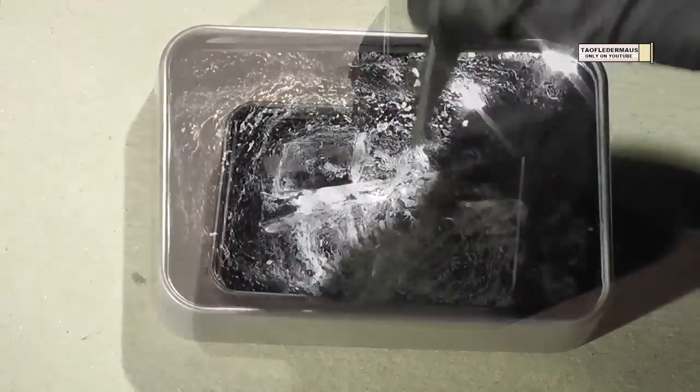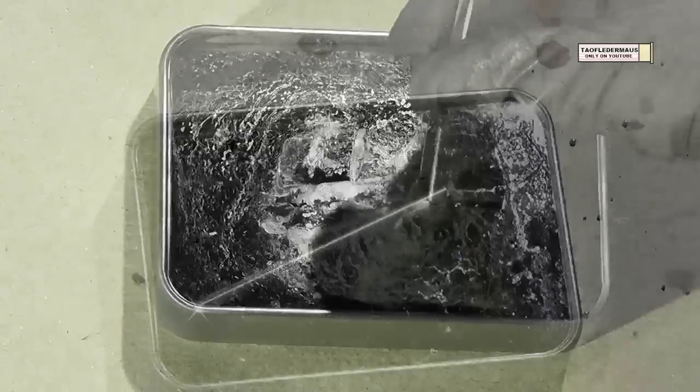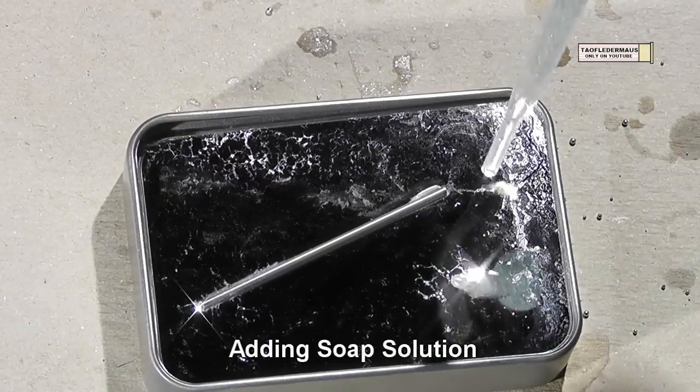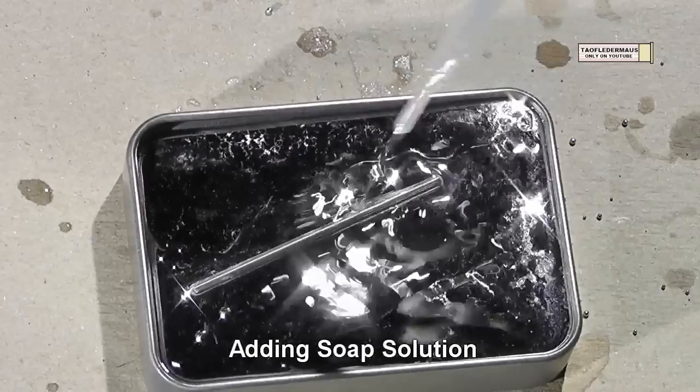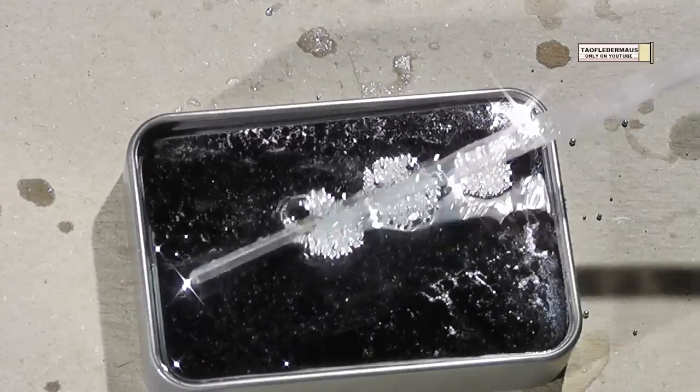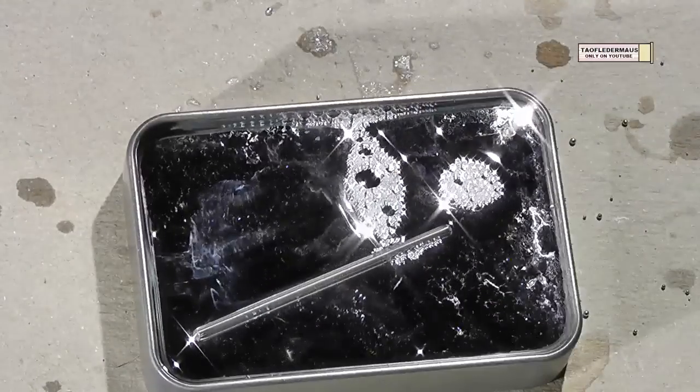And of course it's due to the high surface tension of mercury that we can do this. So what happens if we add a soap solution to this? Will we be able to break that surface tension? The soap solution has absolutely no effect on breaking the surface tension of the mercury.